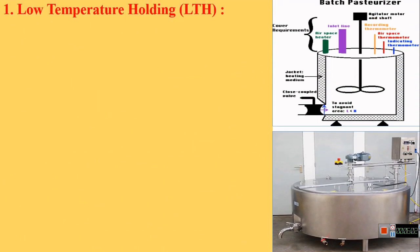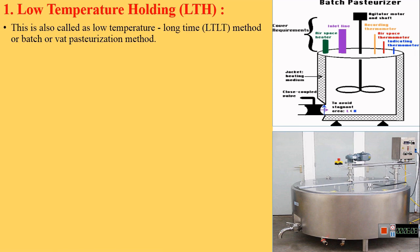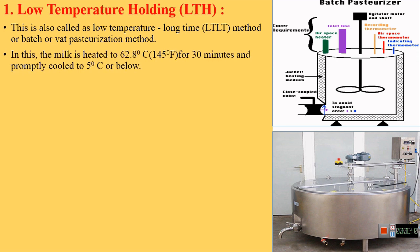The first method is Low Temperature Holding (LTH). This method is also called the Low Temperature Long Time (LTLT) method, batch pasteurization, or vat pasteurization method. The temperature is comparatively low and the time period is long. This process is carried out in a batch-wise manner in vessels called vats. In this method, the milk is heated to 62.8°C (145°F) for 30 minutes and then immediately cooled to 5°C or below.